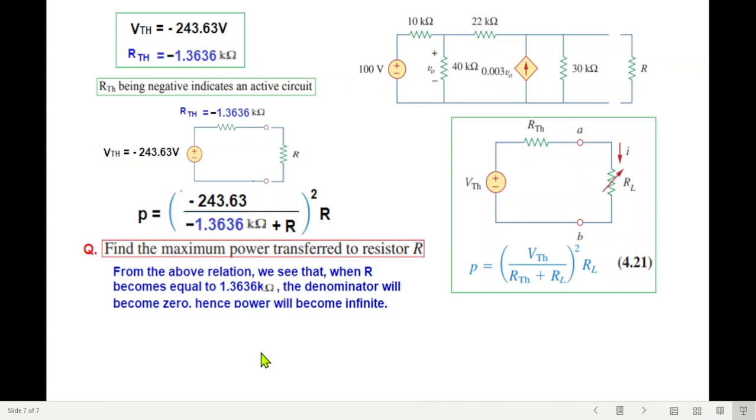So putting in the value of R, this we can adjust to get this value, and from here the denominator will become 0, and so the power will be maximum infinite watt. So that is the answer. I hope you have been able to follow this. Please let me know through your comments. Thank you.